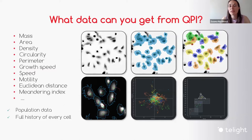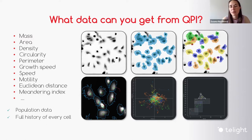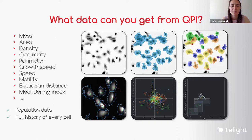With QPI you easily get the cell dry mass. But if you segment the objects, you can also easily quantify other morphological parameters like area and density. And in terms of time-lapse experiments, you can also easily describe cell motility using different parameters — then you get nice morphology and motility data together.